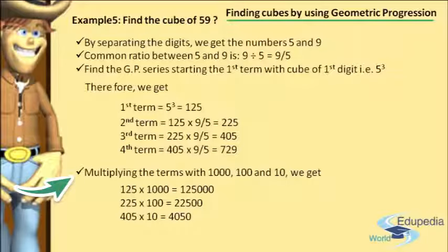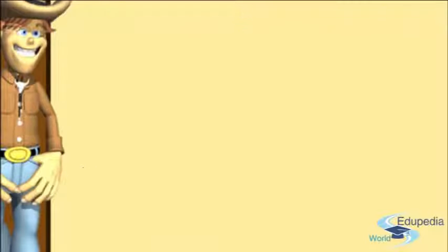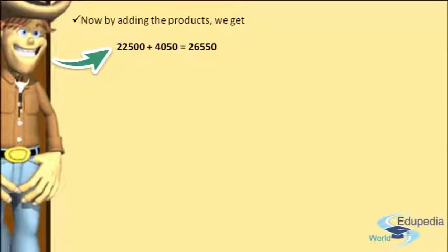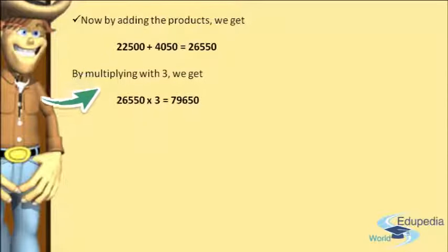After multiplying, we move to step number 5. We take the second product and the third product — that is 22,500 and 4,050 — and add them together, giving 26,550. We then multiply this sum by 3, so 26,550 × 3 gives the product 79,650.